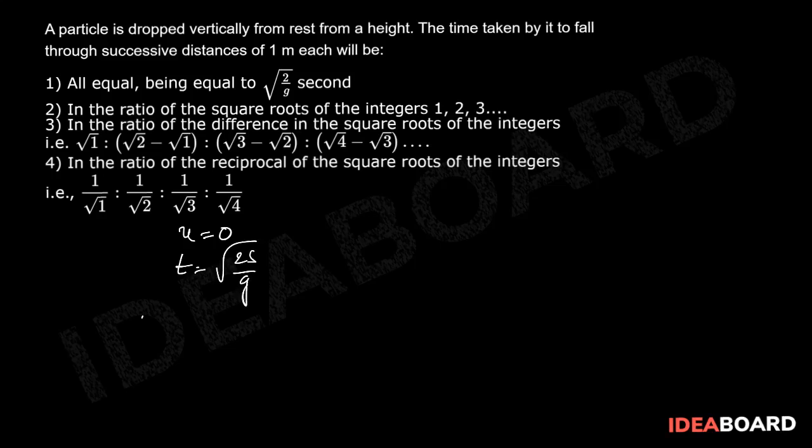Now to travel first 1 meter, t1 equals square root of 2 into 1 by g, that is root 2 by g.